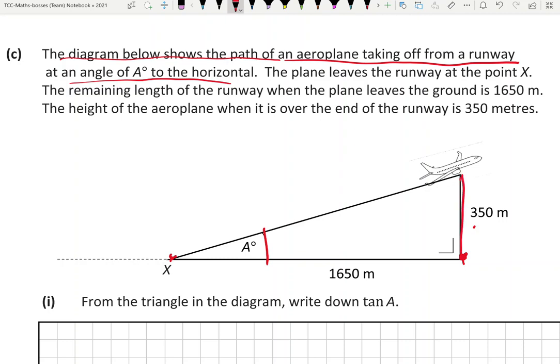The height of the airplane when it is over the end of the runway is 350 meters. So we're given the opposite side and we're given the adjacent side, and these are the right angle legs. From the triangle in the diagram, write down tan of A.